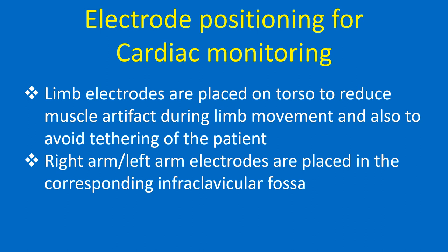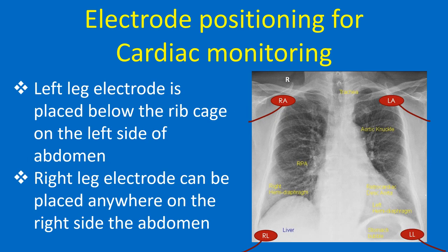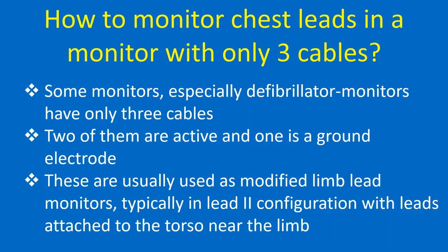Limb electrodes are placed on the torso to reduce muscle artifact during limb movements and also to avoid tethering of the patient. Right arm and left arm electrodes are placed on the corresponding infraclavicular fossa. Left leg electrode is placed below the rib cage on the left side of the abdomen. Right leg electrode can be placed anywhere on the right side of the abdomen.